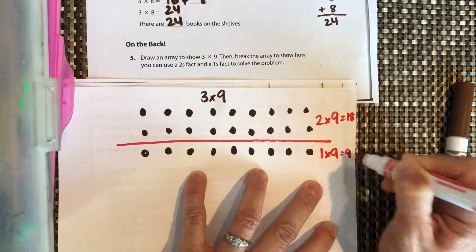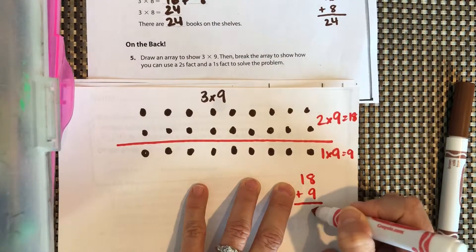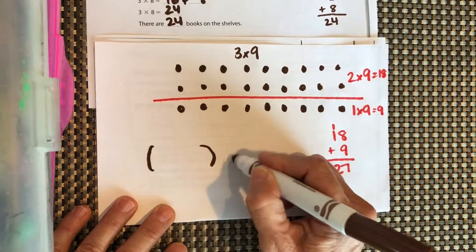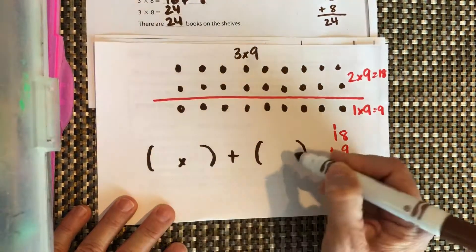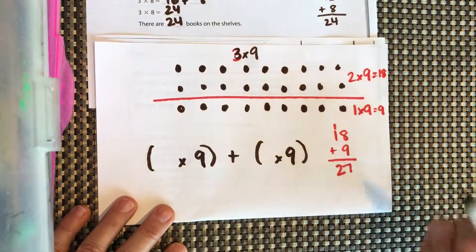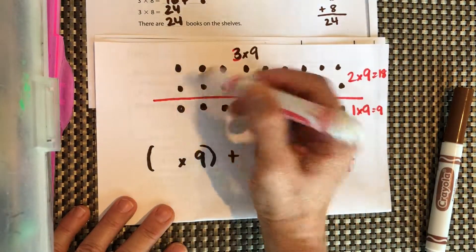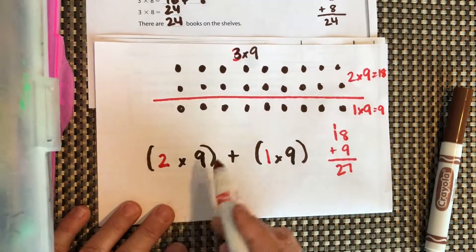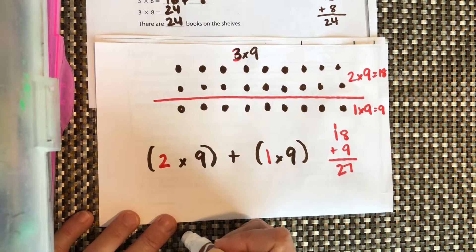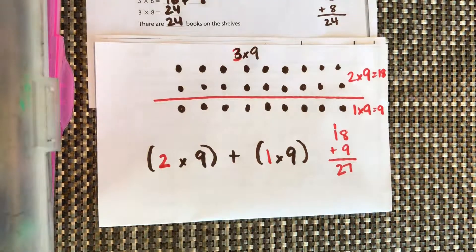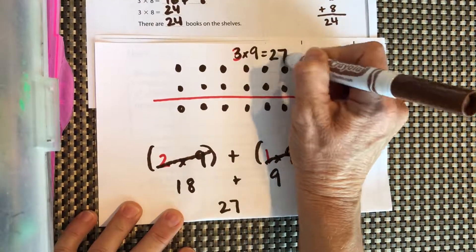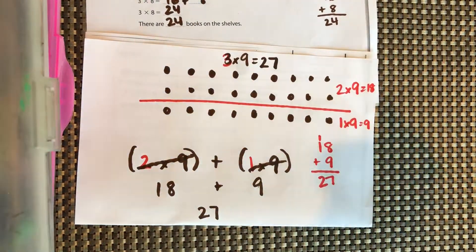You should have two times nine and one times nine, which equals 18 and 9, and that equals 27. Now let's draw the parentheses notation: we have a three and a nine; our nine stays the same. We broke our three into two groups of nine and one group of nine. Calculating those gives us the same answers — 18 plus 9 equals 27. So three times nine equals 27. Good job!